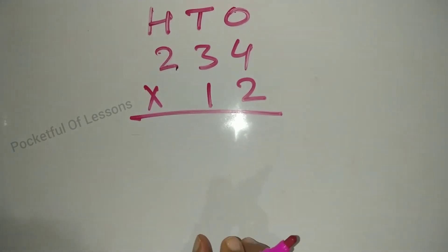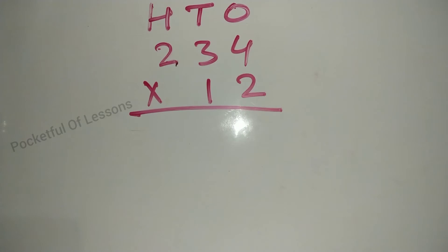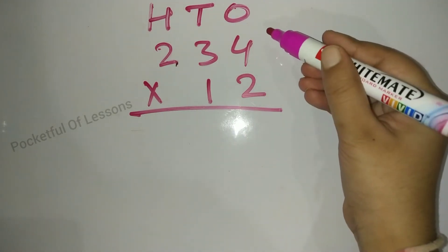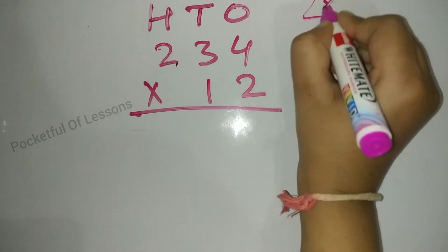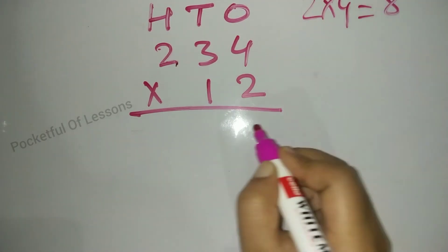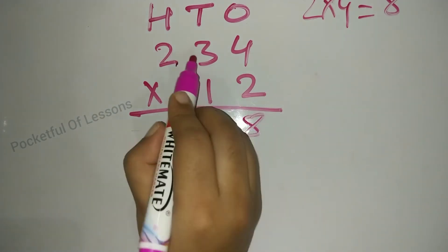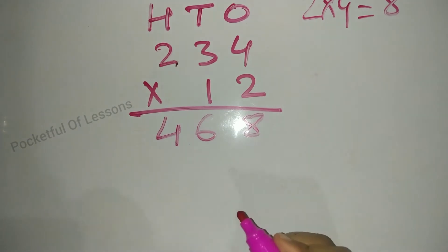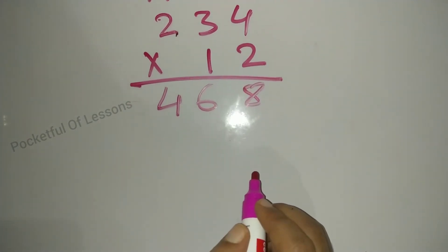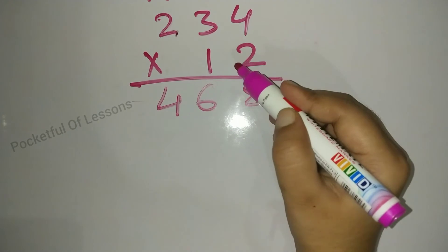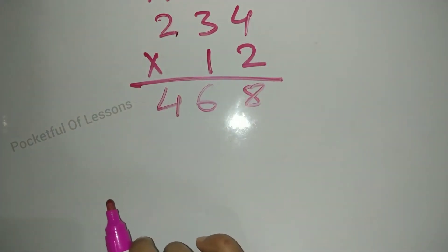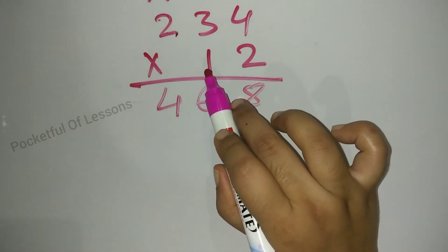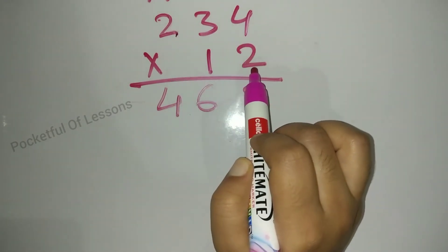Let's see. First of all, who will start? We will start with 2. So 2 into 4 is 8. Two, three is 6. Two, two is 4 — we write 4 directly, because you don't have a carry. So the first row with 2 is complete. Now what we have to do? The tens digit is left, and we have to do the same process.